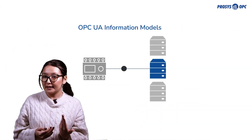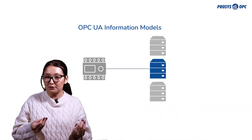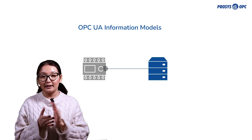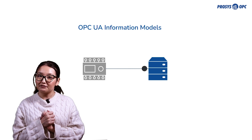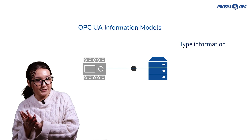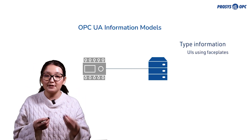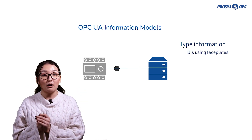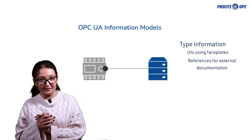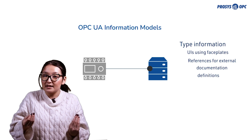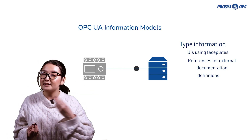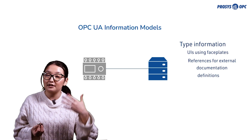In OPC UA, the address space became much more powerful. First of all, historical data and alarms can be directly linked to the measurements. The main improvement, however, is type information, which enables much more intelligent applications. You can prepare user interfaces with specific faceplates for well-known machine types. Also, you can use references to create external documentations or definitions. All this can help a lot with integrations going towards automatically configured production lines in a plug-and-produce manner.